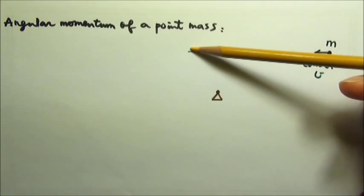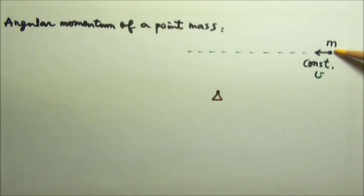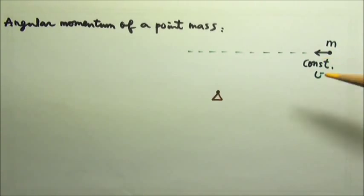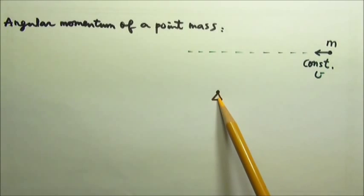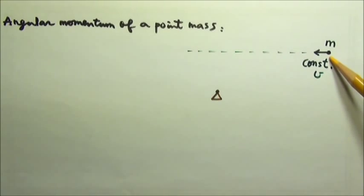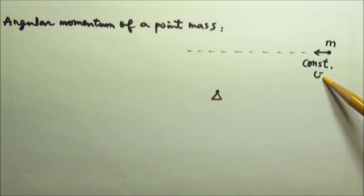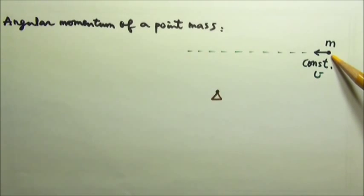So an object moving along a straight line can have angular momentum. For example, consider a point mass M moving at a constant velocity V. Let's find its angular momentum relative to this axis. Since the point mass has a constant velocity, no acceleration, the net force on the point mass must be zero. Let's just say there are no forces acting on it.